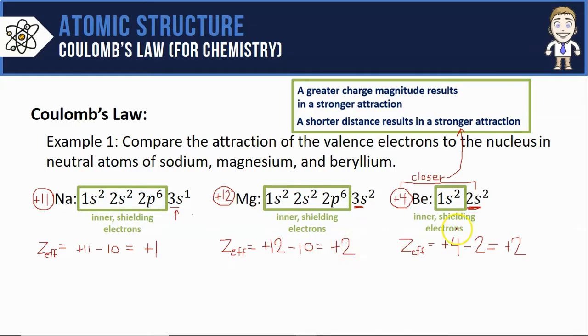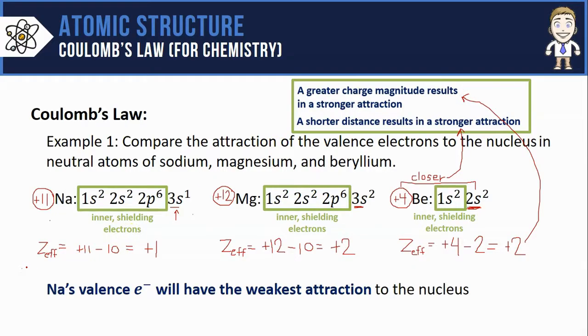And now I can see that magnesium and beryllium both have greater charge magnitudes suggesting a stronger attraction. All of this information tells me that sodium's valence electrons will have the weakest attraction to the nucleus. Not only are they farther away, they also experience the smallest effective nuclear charge or the lowest charge magnitude.